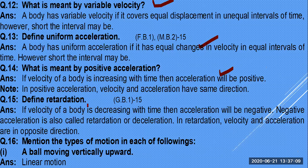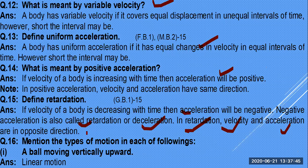Uniform acceleration: a body has uniform acceleration if it has equal changes in velocity in equal intervals of time, however short. Positive acceleration: if the velocity of a body is increasing with time, acceleration is positive. Retardation: if velocity is decreasing with time, acceleration is negative — also called deceleration. Velocity and acceleration are in opposite directions.